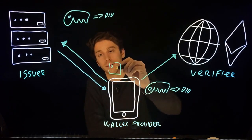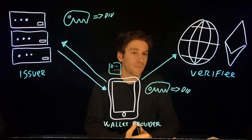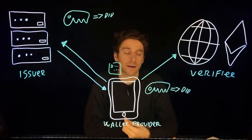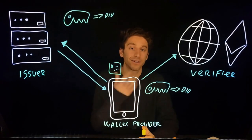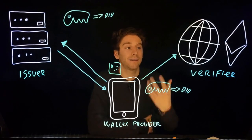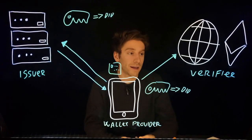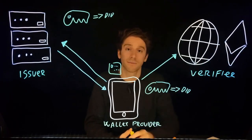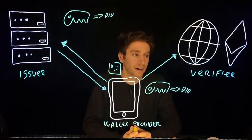The last component is dedicated to verifiers. A verifier can be, for example, a Web2 or a Web3 platform that wants to authenticate users based on their identity. This is a library available in both JavaScript and Go, and it is also available for Web3 applications in the form of a smart contract.